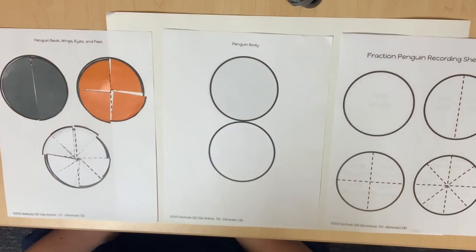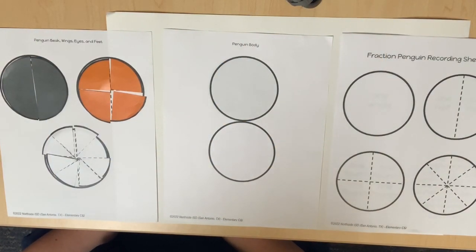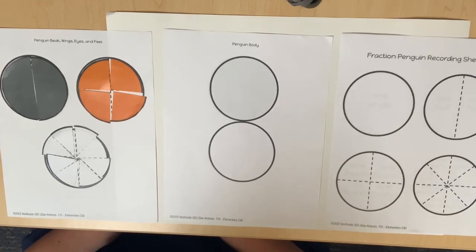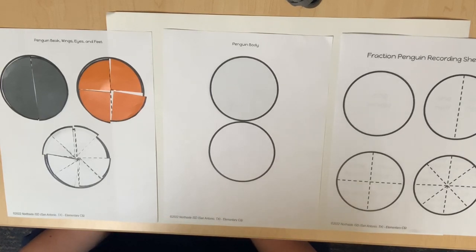In this lesson, students will use an area model such as circles to determine fractional parts of a whole. Students will partition circles into fractional parts and will use the fractional parts to create a penguin. Students will also label the fractional parts on a recording sheet.